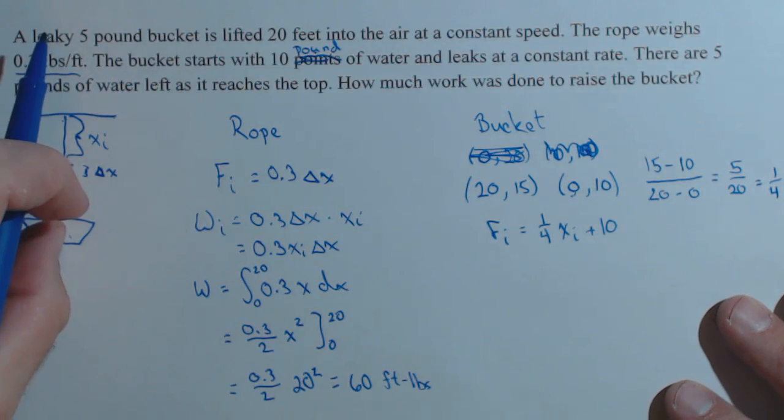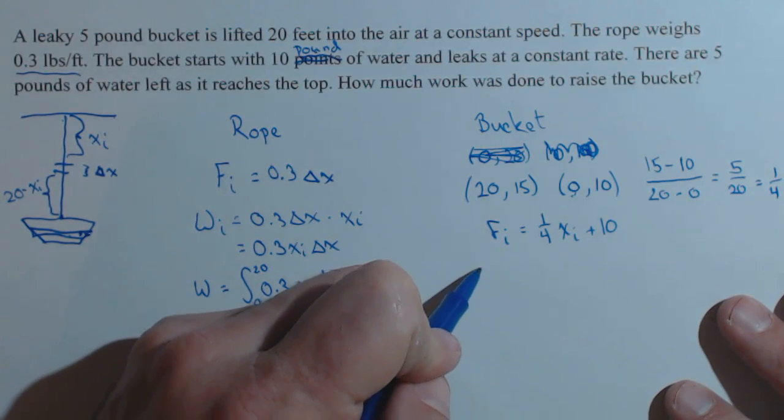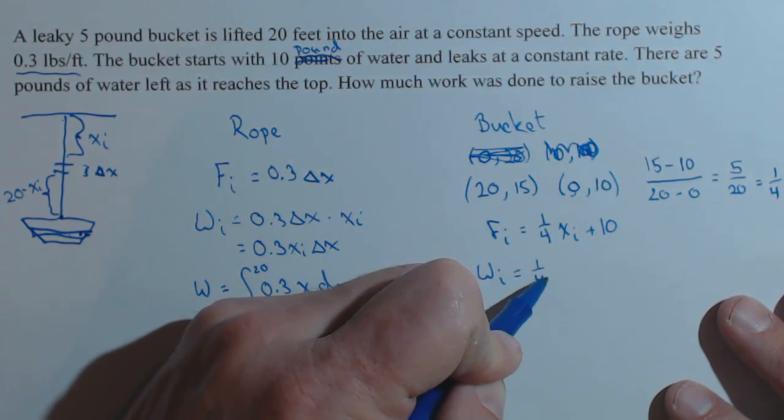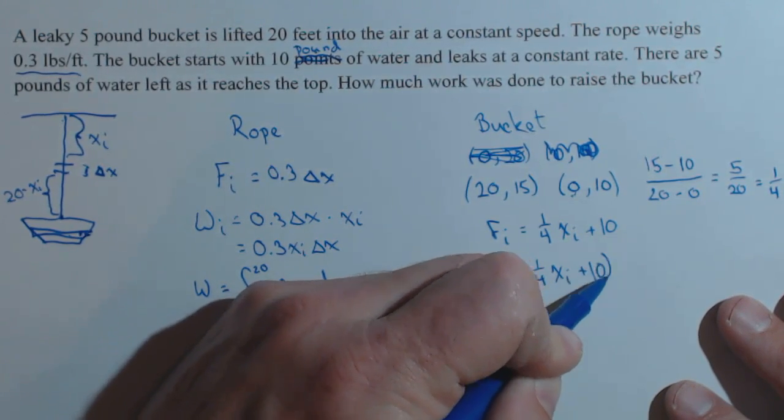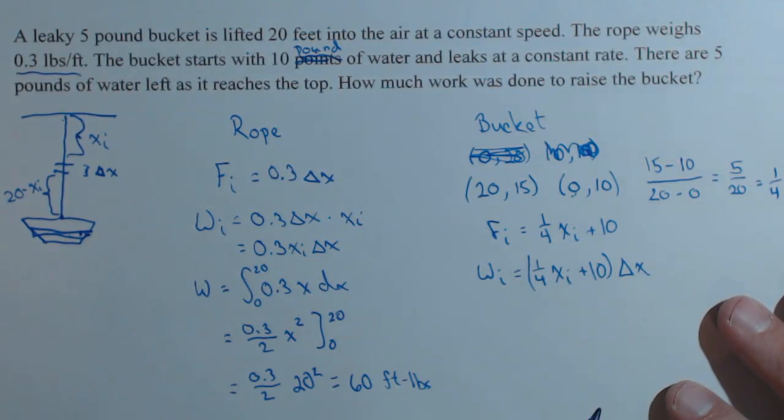Well, think about moving the slice of bucket. So here's our slice. Think about moving that a distance of delta x. So the work on the ith slice is 1 fourth x sub i plus 10 times delta x.